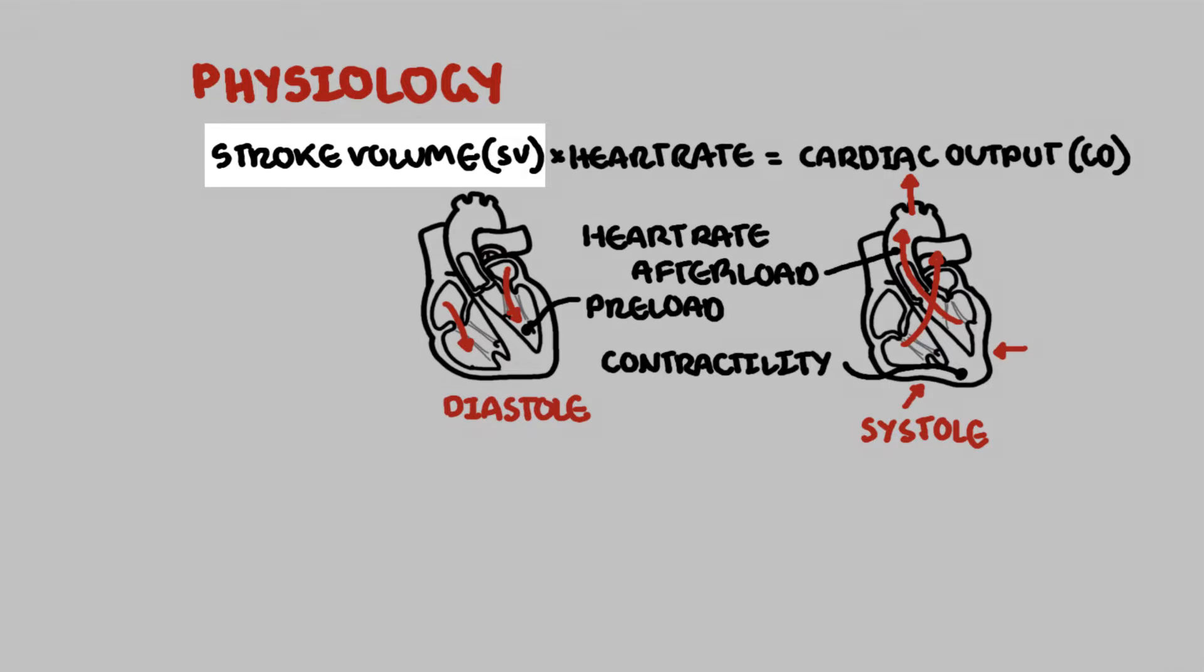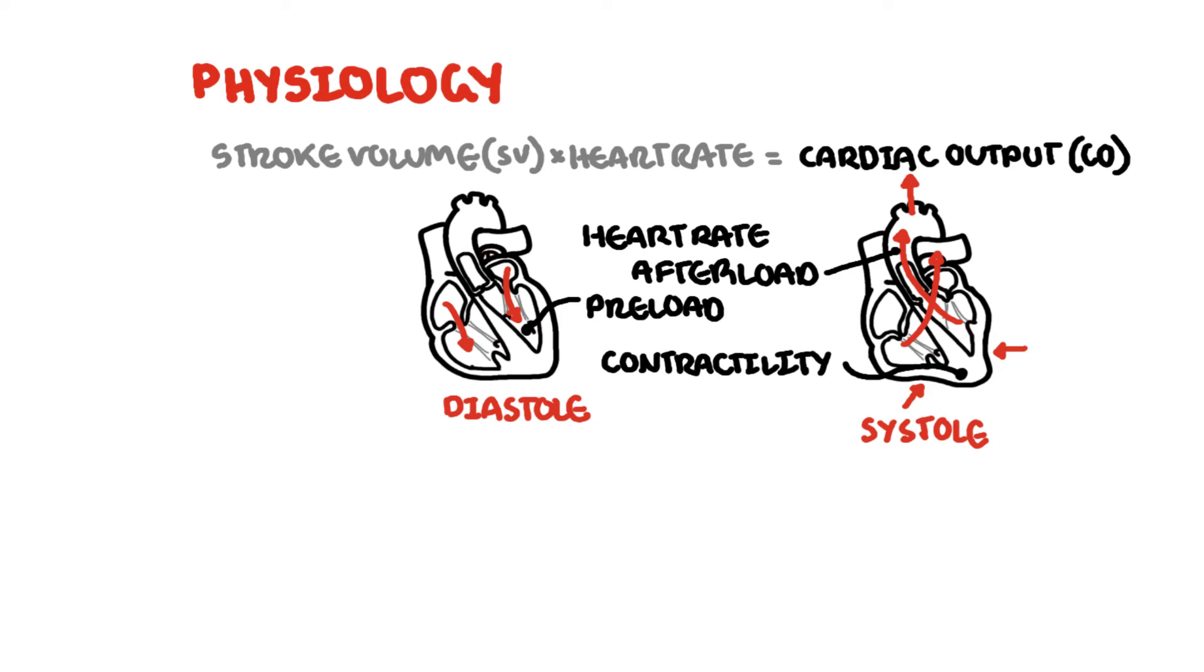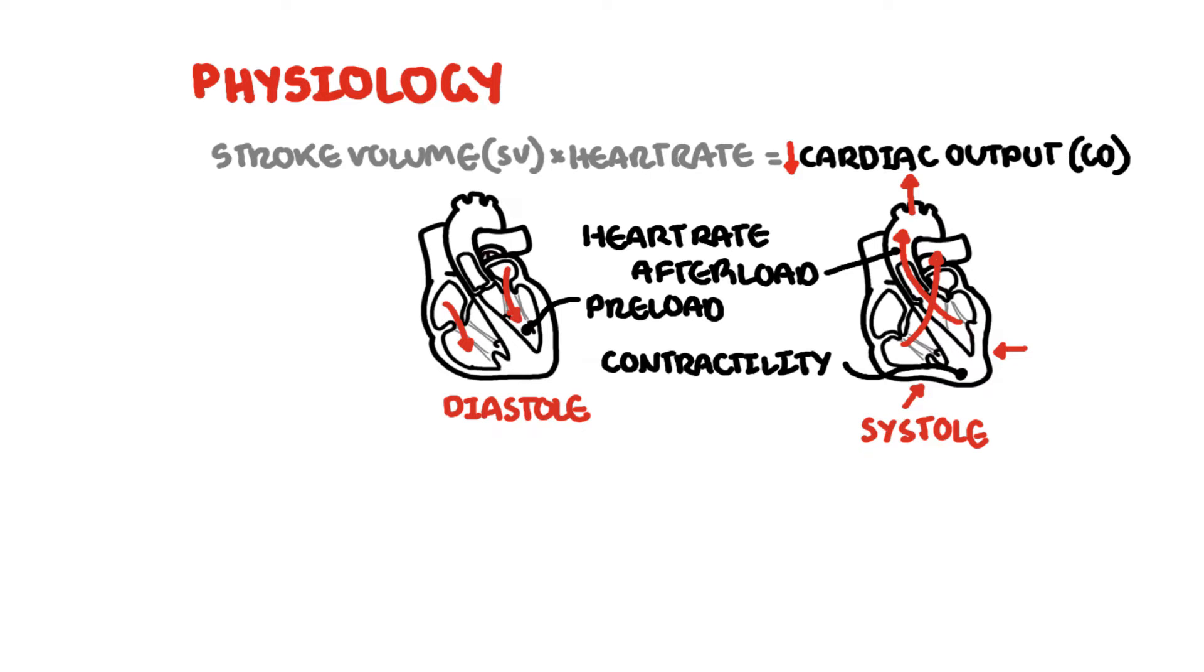Contractility, afterload, and preload all affect stroke volume. Low cardiac output is the main feature in heart failure. The heart fails to pump blood to the rest of the body. Cardiac output may be inadequate as a result of any alterations in the determinants we talked about.